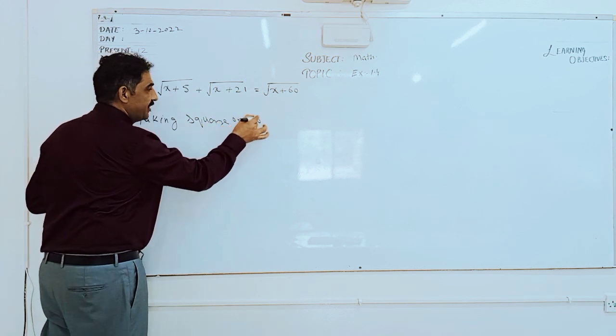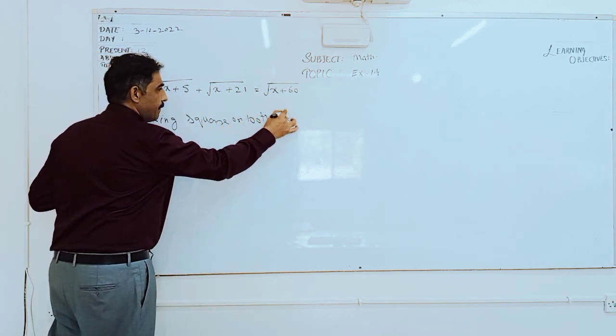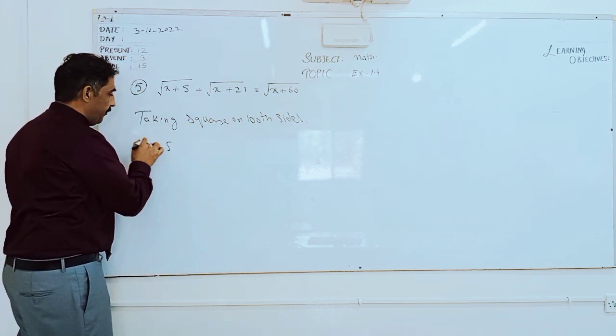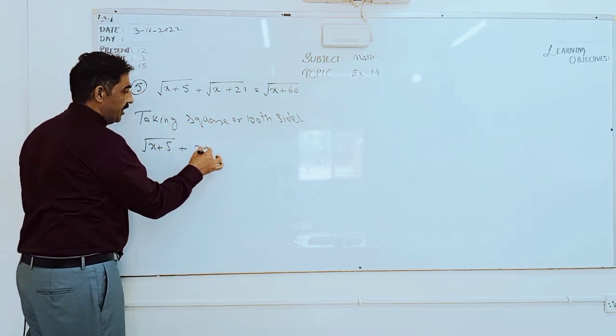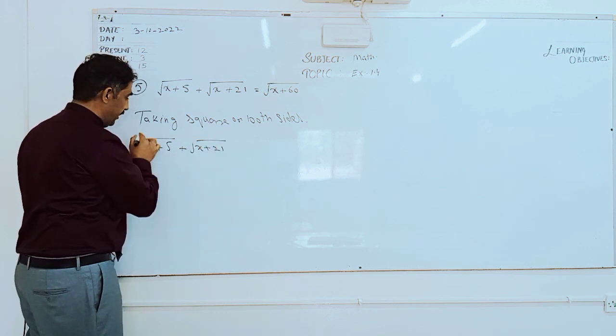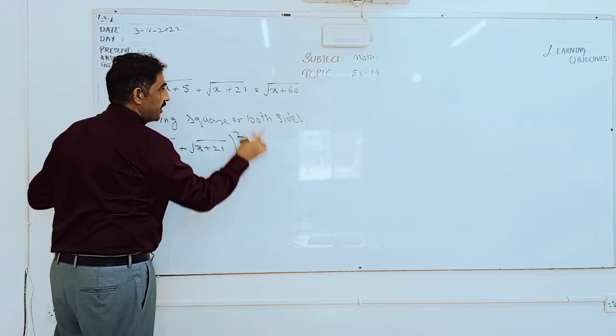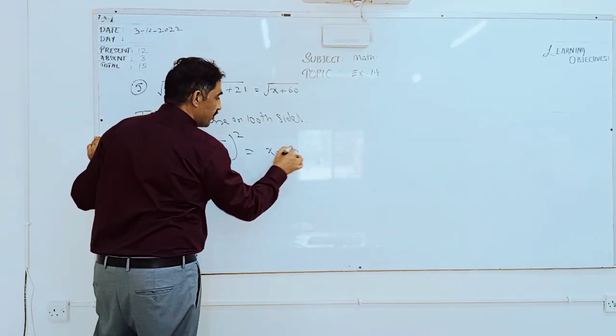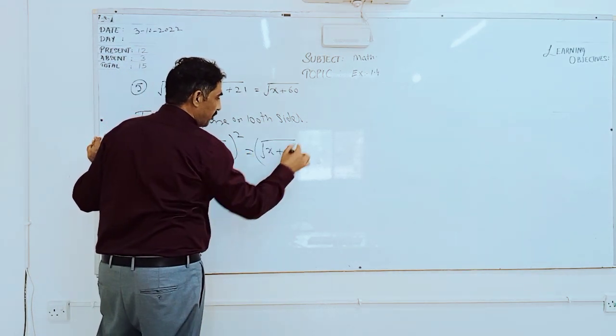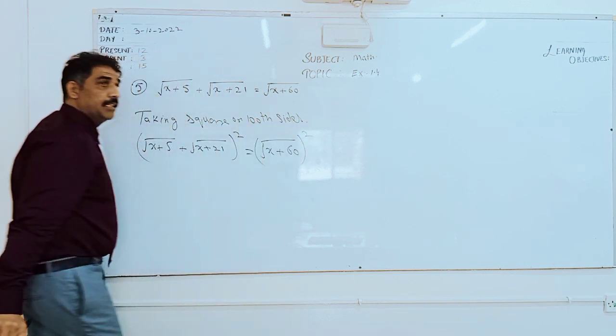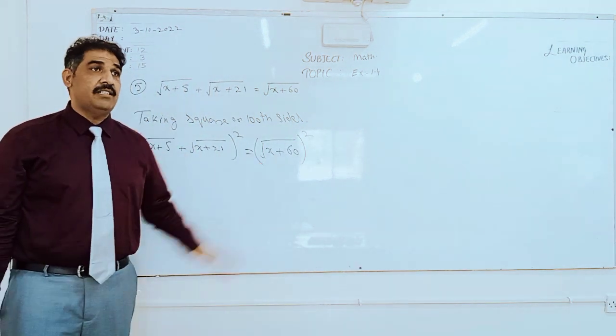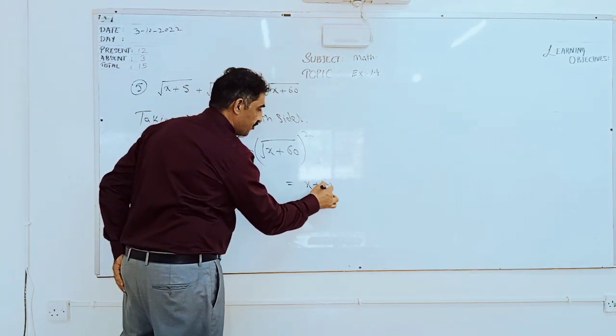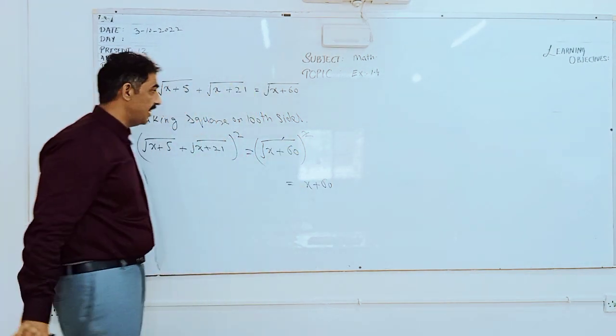Here on both sides, √(x+5) + √(x+21), both square because they have complete left hand sides. Here and here. Don't write it, this time try to understand. After that I will give you time to write it. The right hand side, we can cancel like that: x+60, because here we can cancel by square.